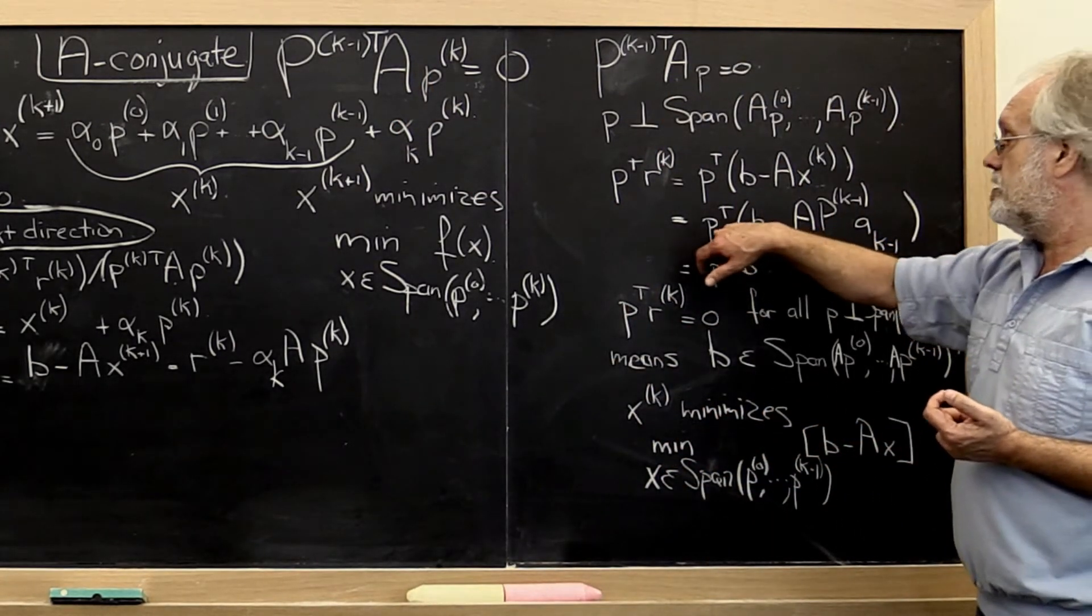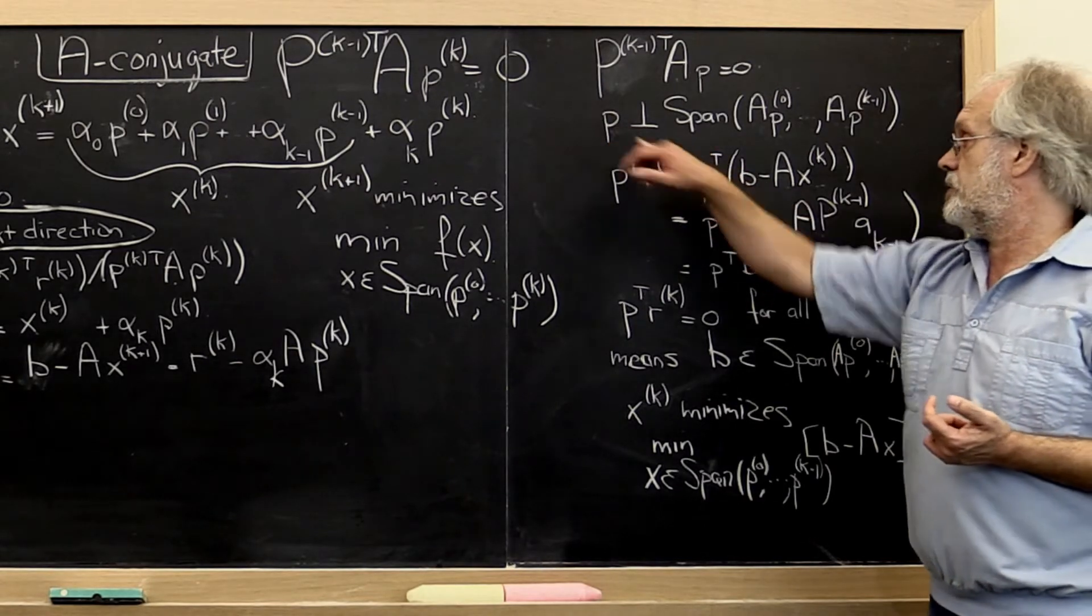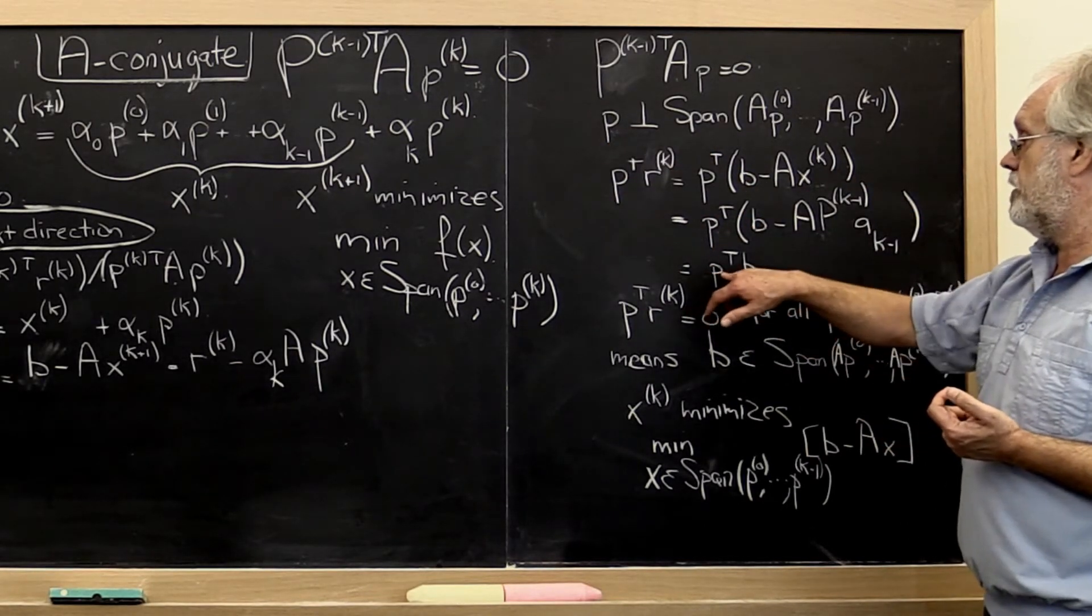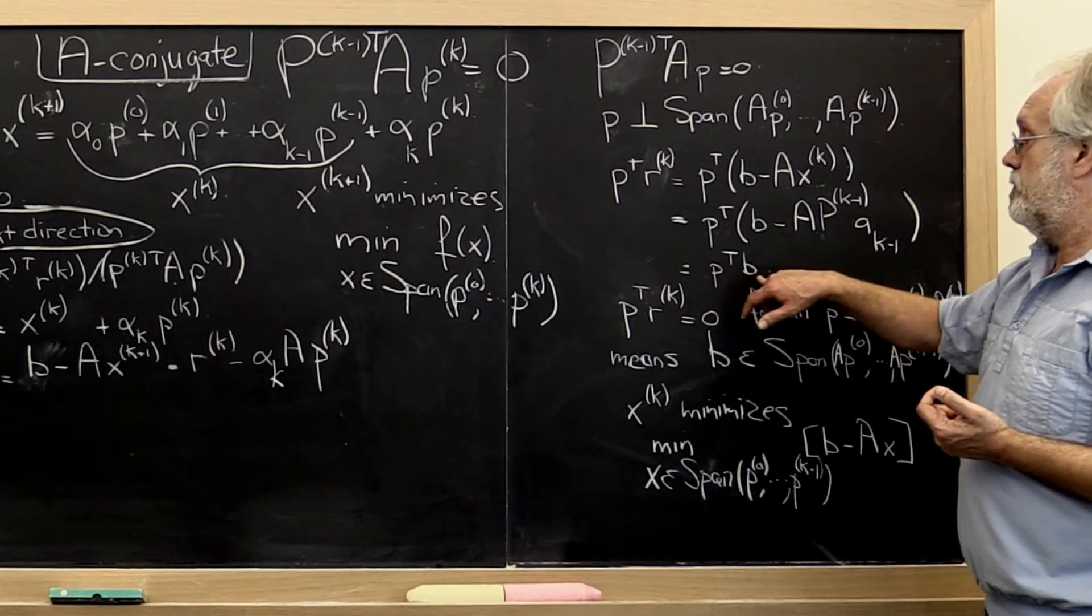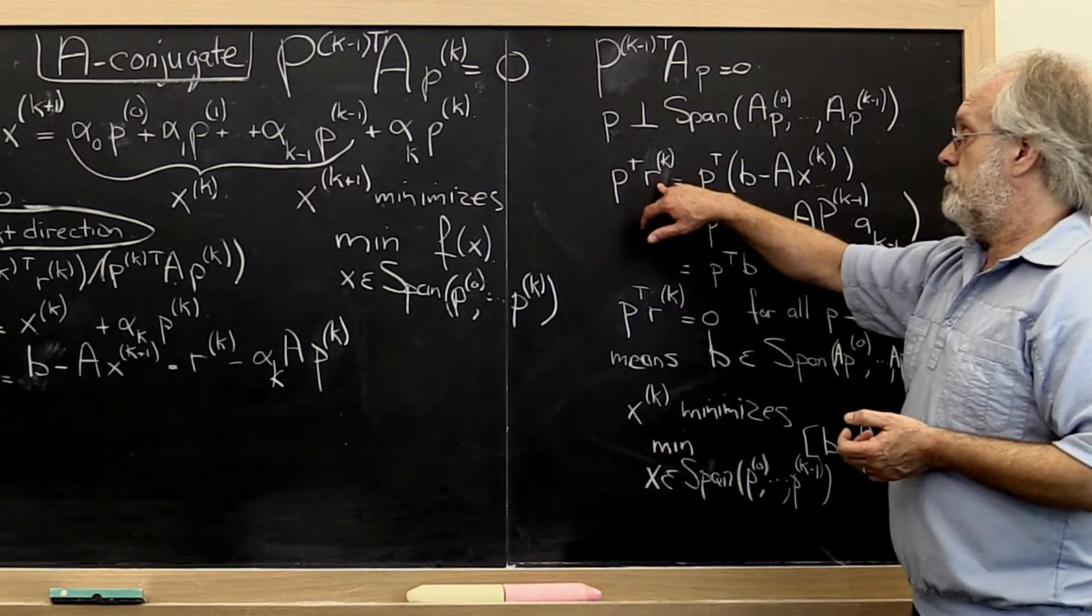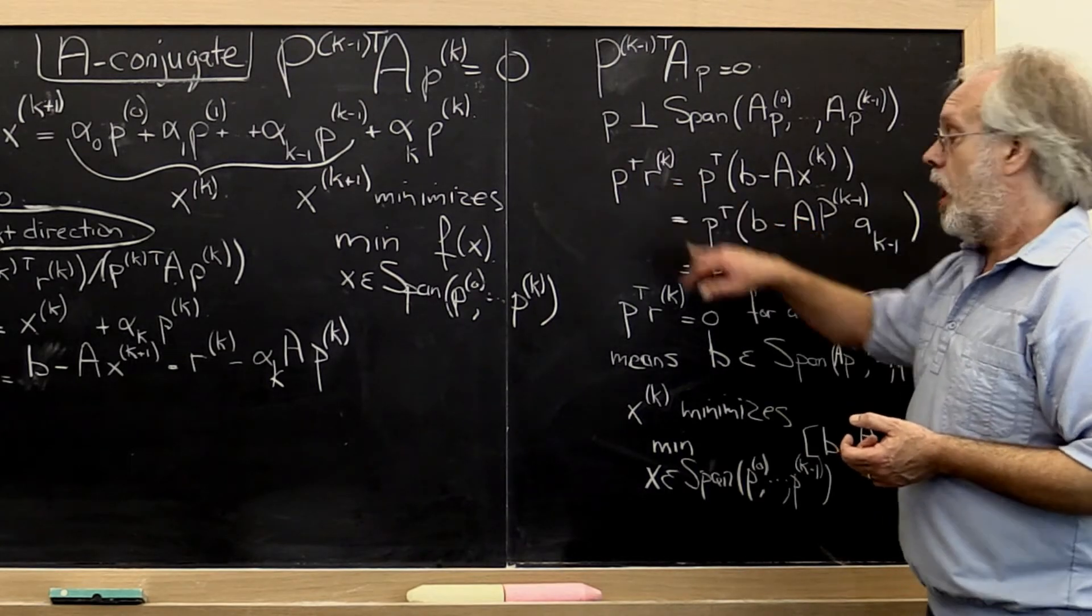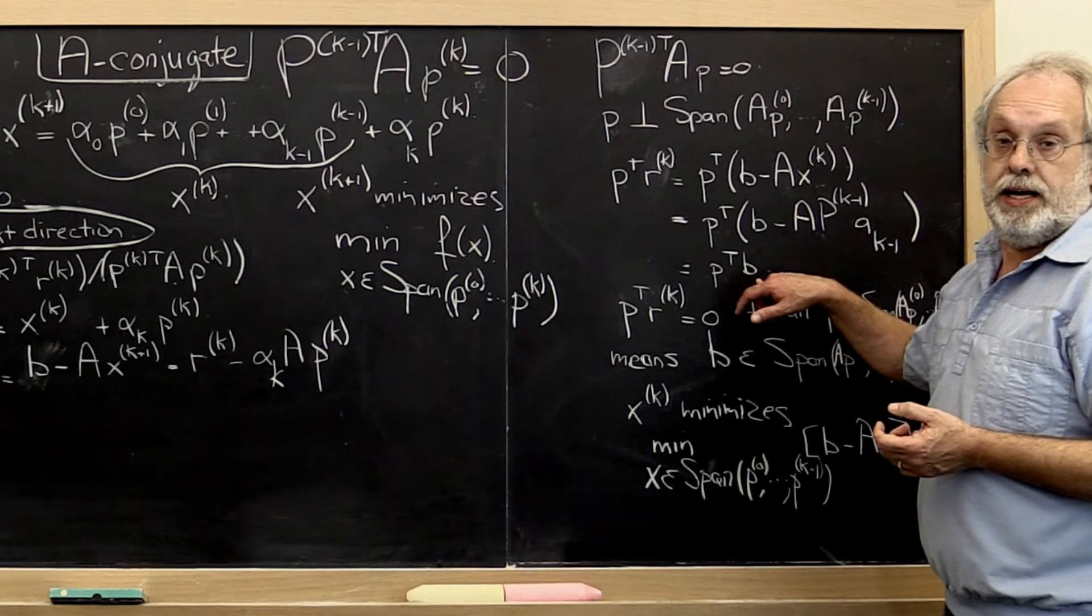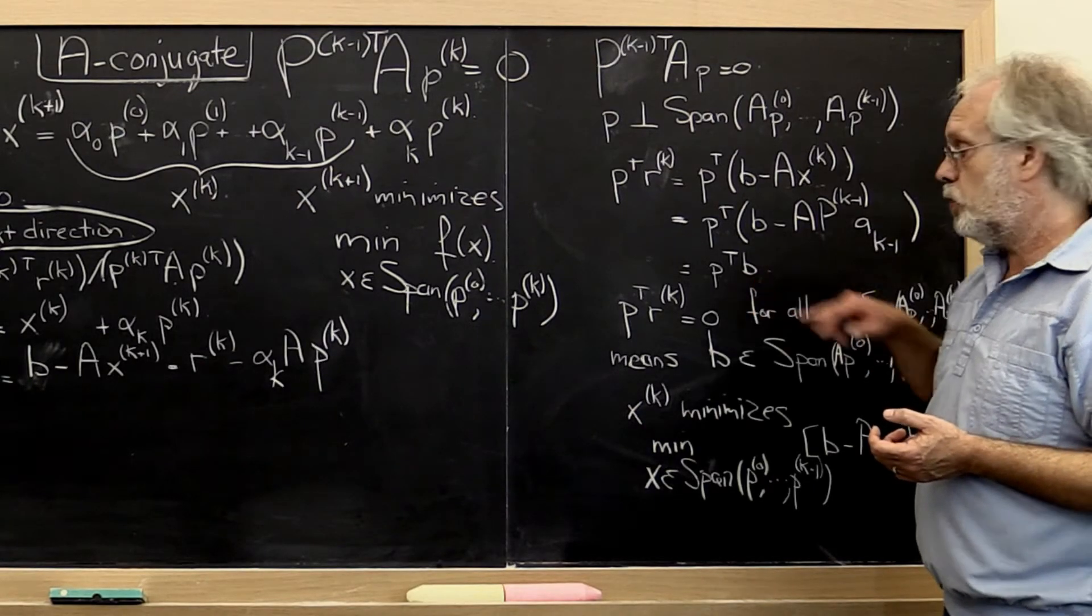And notice that because we chose all of these directions to be a conjugate, this term disappears. And we're left with that P is perpendicular to B. So if P is perpendicular to the current residual, then P is also perpendicular to our original right-hand side B. But what does that mean?